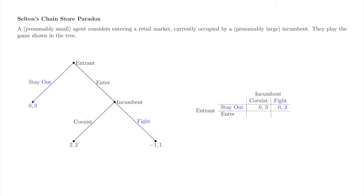Now suppose that the entrant plays stay out and the incumbent plays fight. The induced path of play is that the entrant stays out and the game ends. Payoffs are 0 to the entrant and 3 to the incumbent.